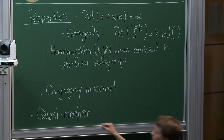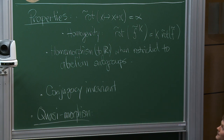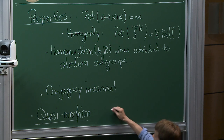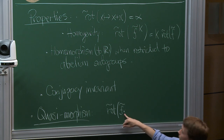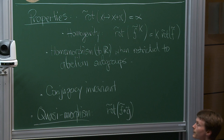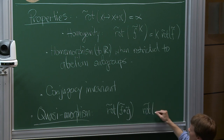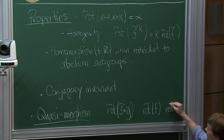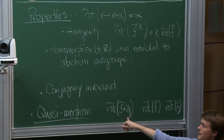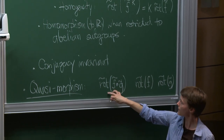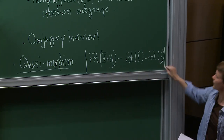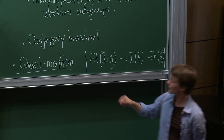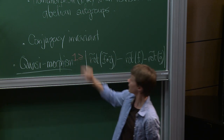The rotation number is a conjugacy invariant: the rotation number of a conjugate of f equals the rotation number of f. And although not a homomorphism in general, it's a quasimorphism — bounded distance away from a homomorphism. Specifically, if you compare the rotation number of a product fg to the sum of the individual rotation numbers, the difference is uniformly bounded, in fact bounded by 1 in absolute value.